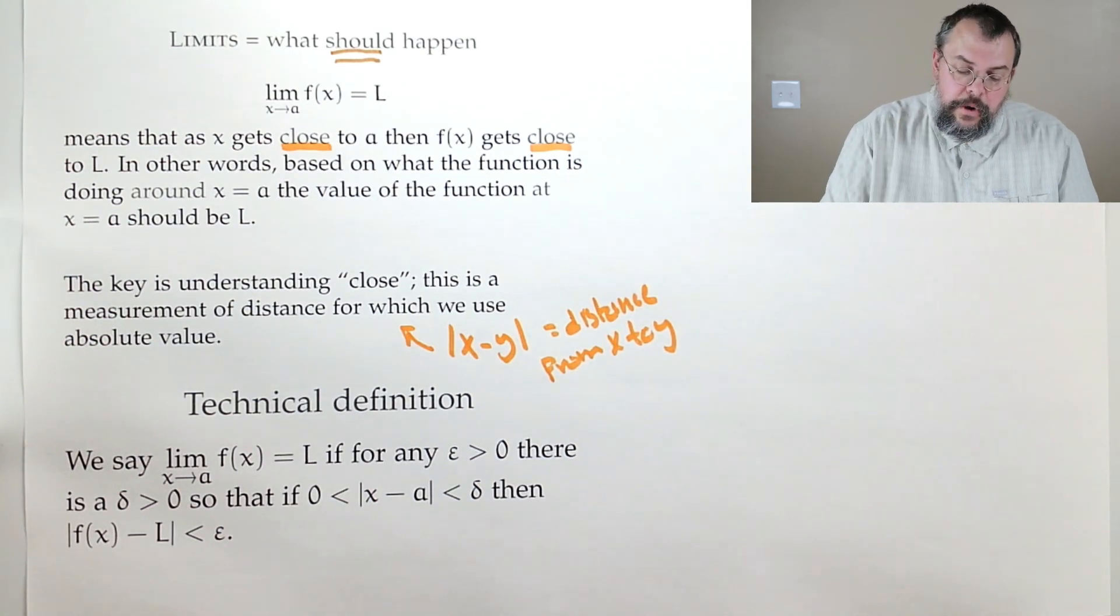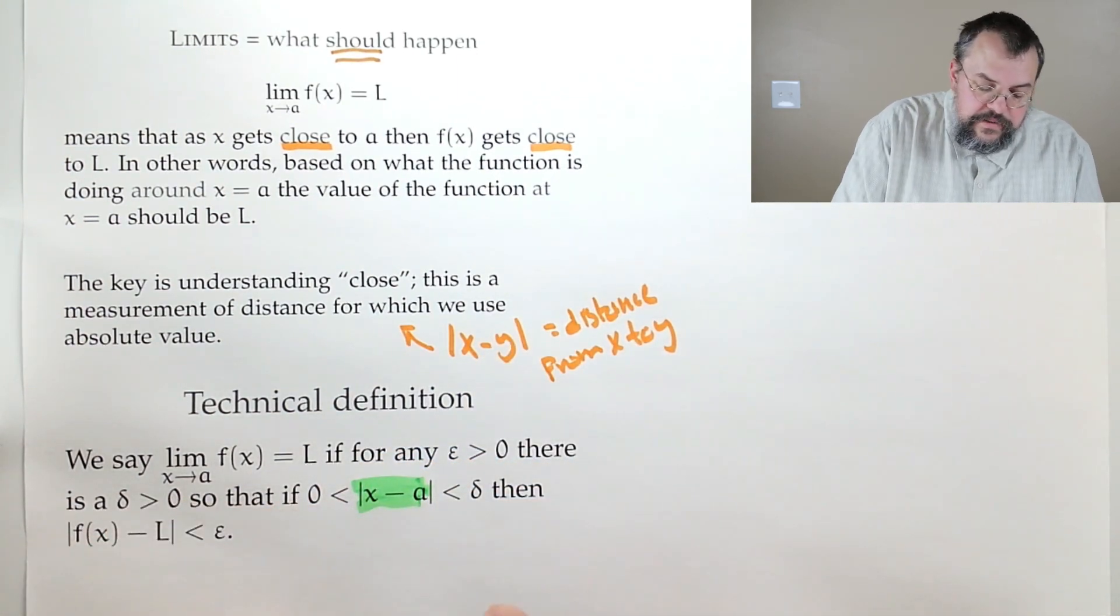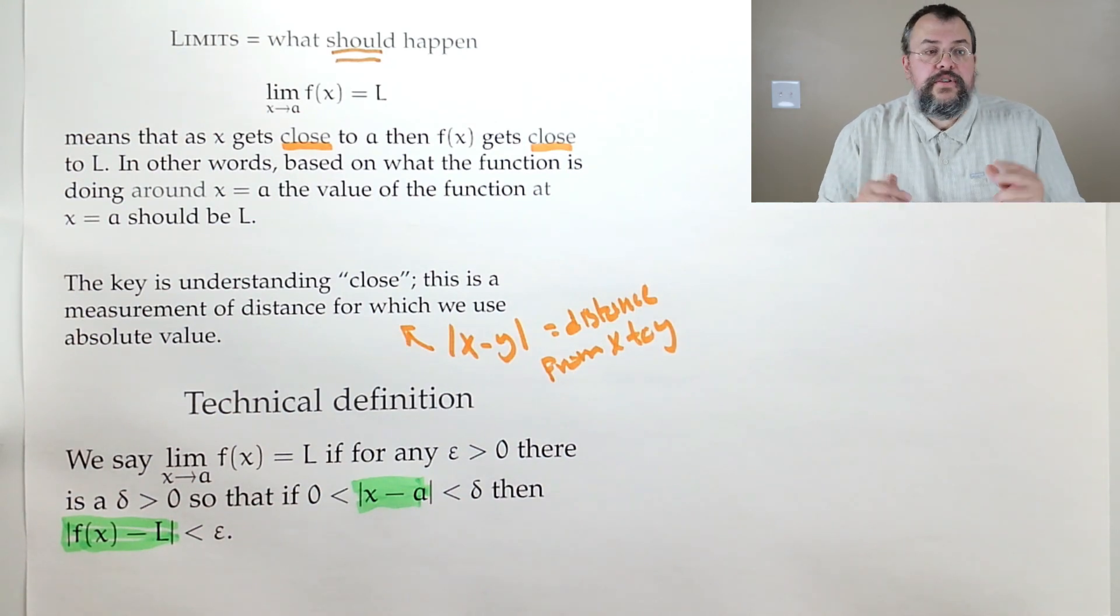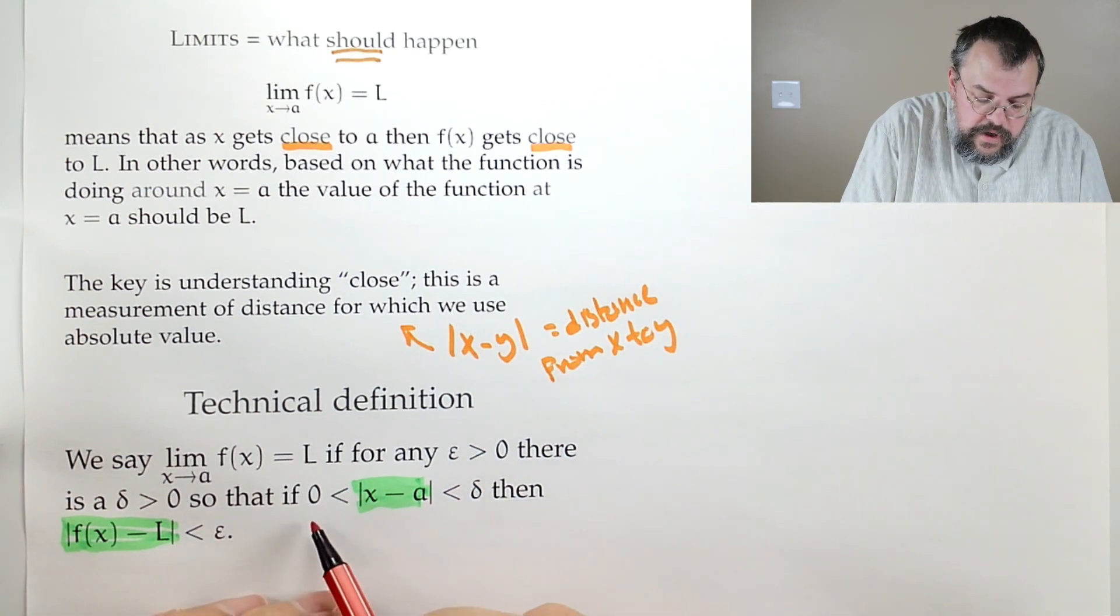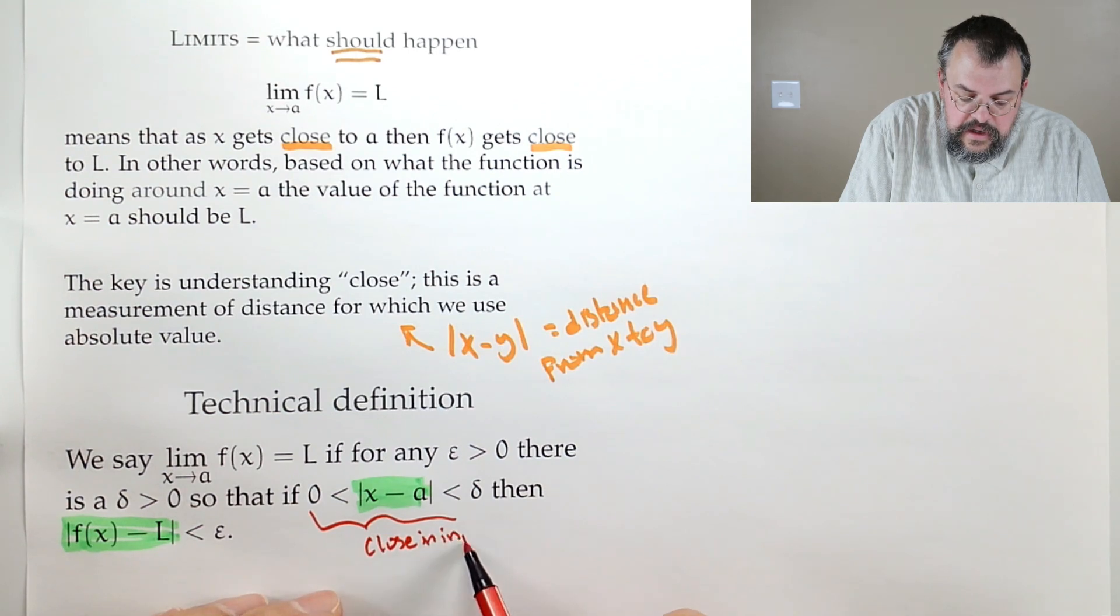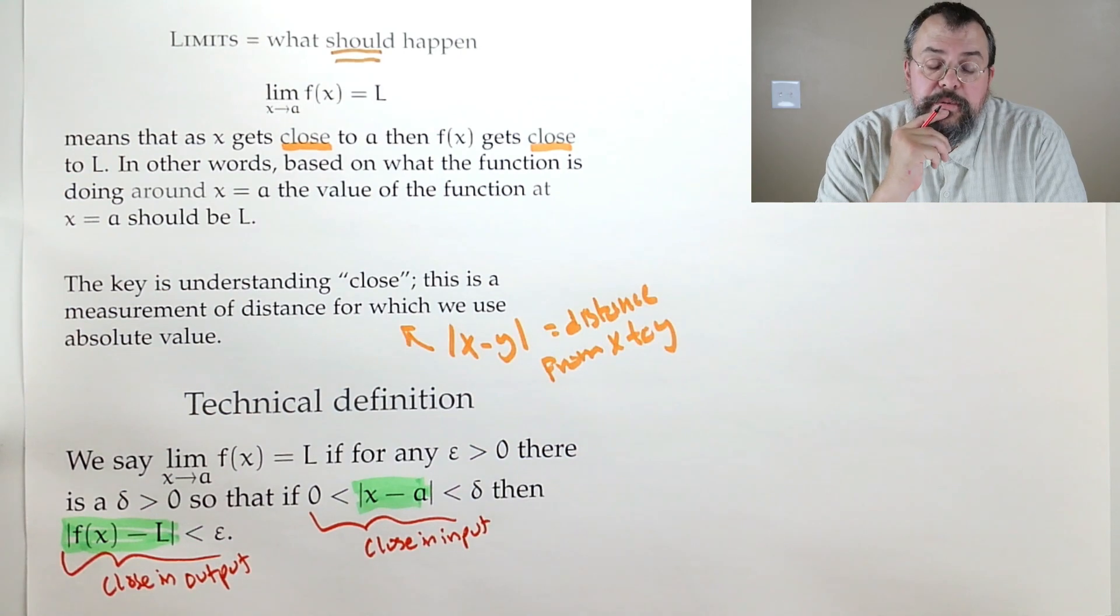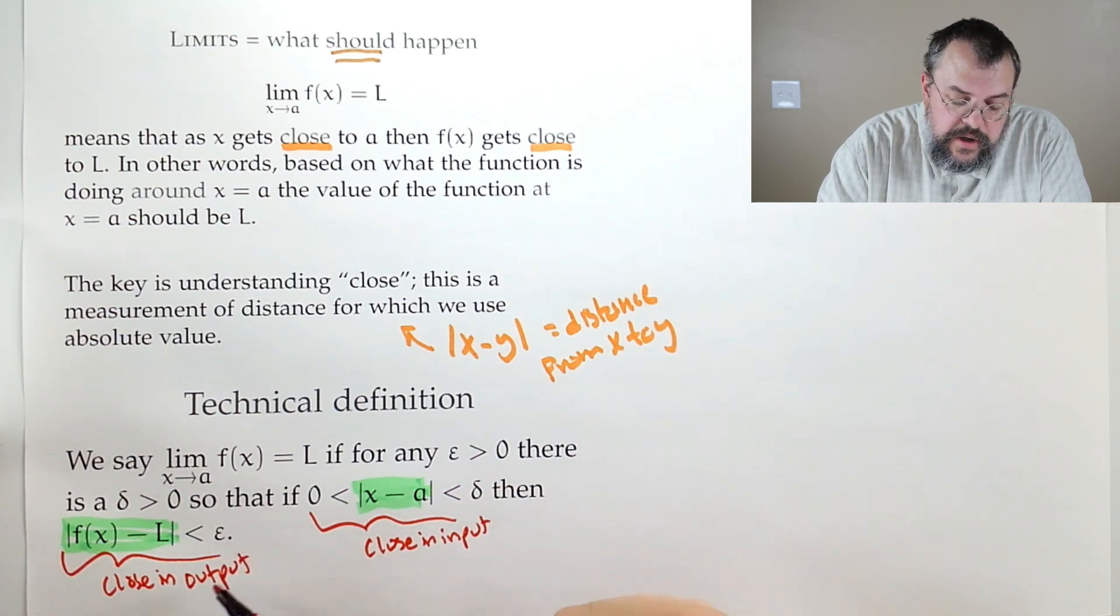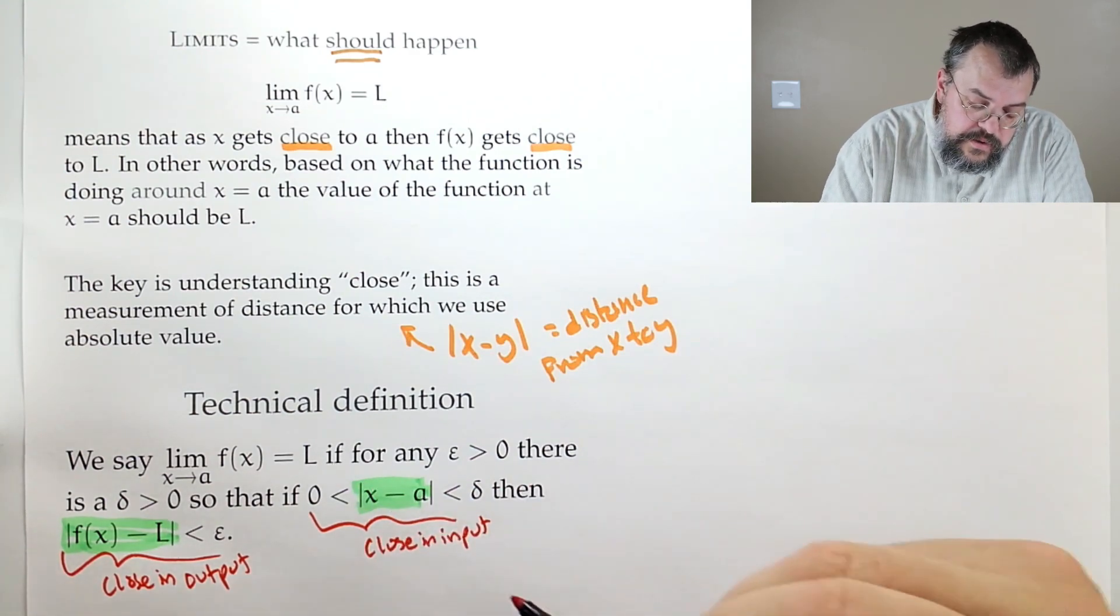Now, there's a couple things to know. We already talked about absolute value as being distance. So we see it showing up twice, absolute value of x minus a, and absolute value of f(x) minus L. So those are our two distances. So what we have here is we say, all right, this is we're close in our input. And then the other one says, hey, we're close in our output. All right, so that's making more sense. Now, let's see if we can figure out what's going on here.